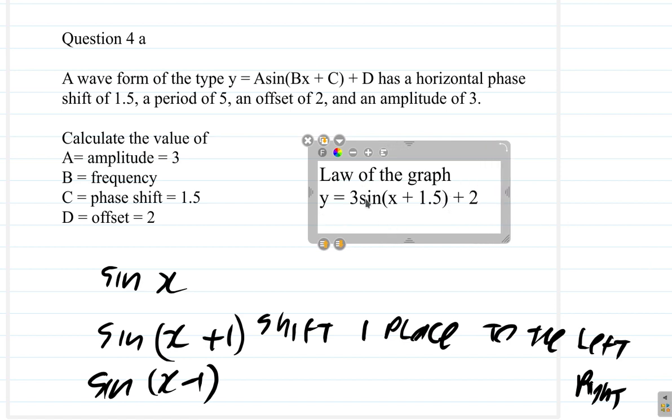Alright, so the 3 raises it to an amplitude. The maximum point from 0 is 3. The minimum point is negative 3. The 1.5 shifts the graph 1.5 places to the left. And then the plus 2 pulls it up by 2 places vertically.